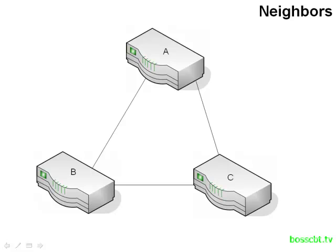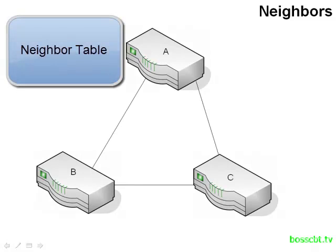Once you become a neighbor, this information is stored in what is called a neighbor table. Inside this table, we hold state information on each router — whether it's up or down, available or not — as well as the IP address of that router and what interface to use in order to connect to it.